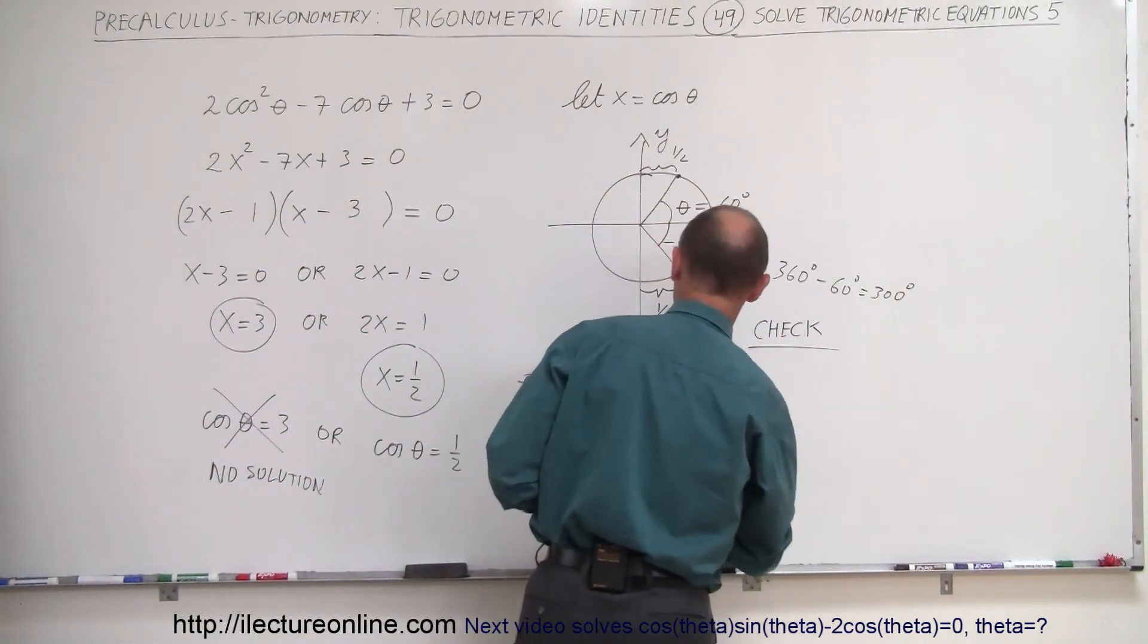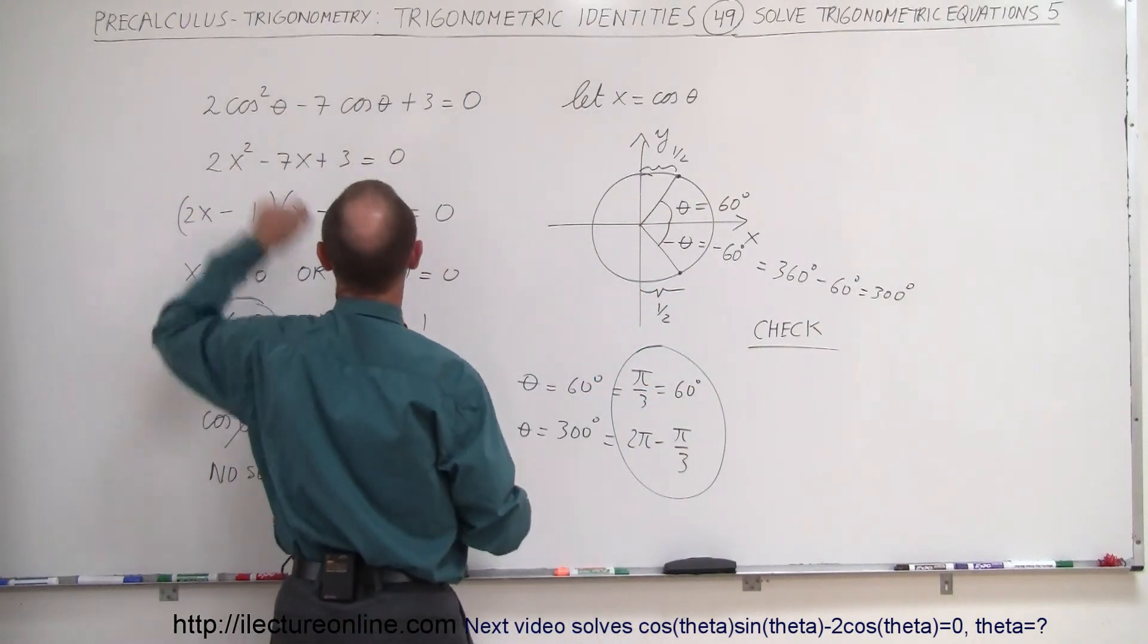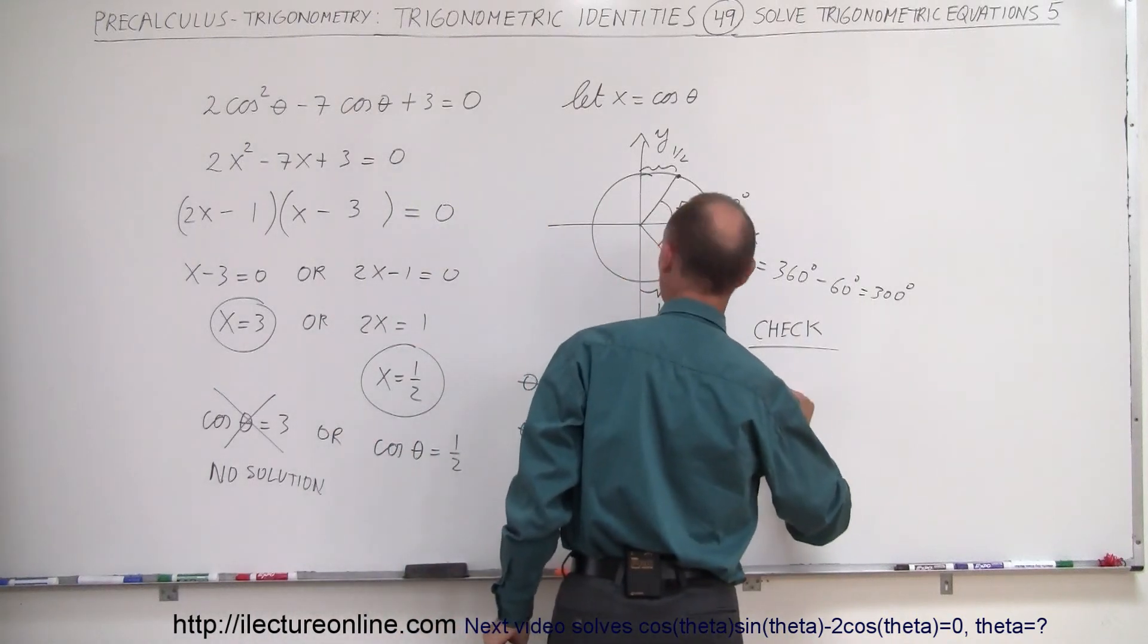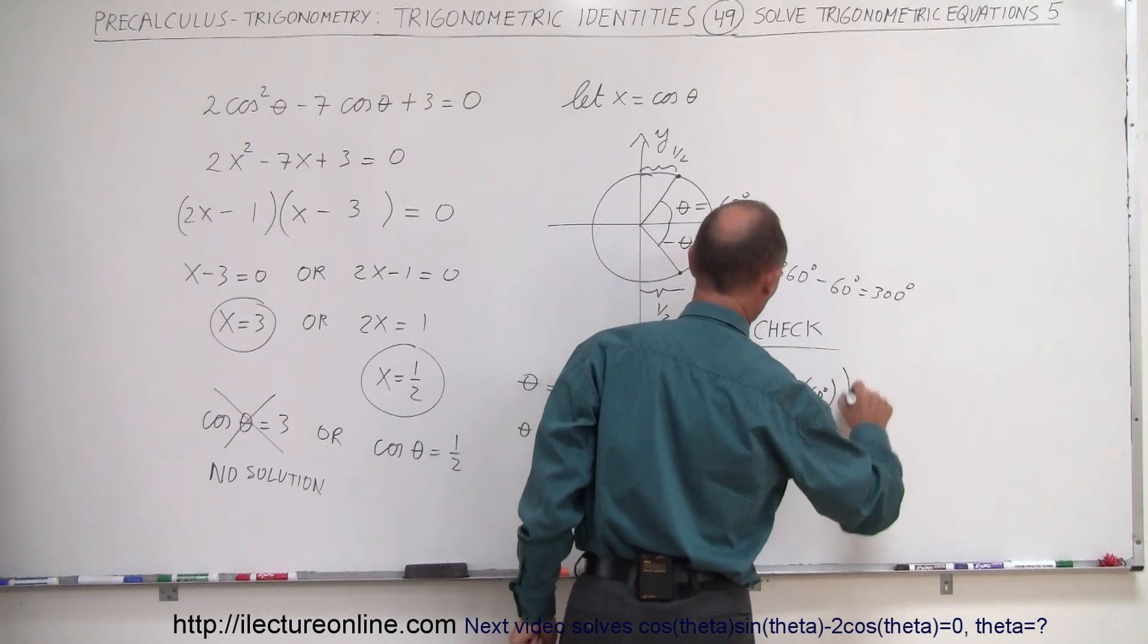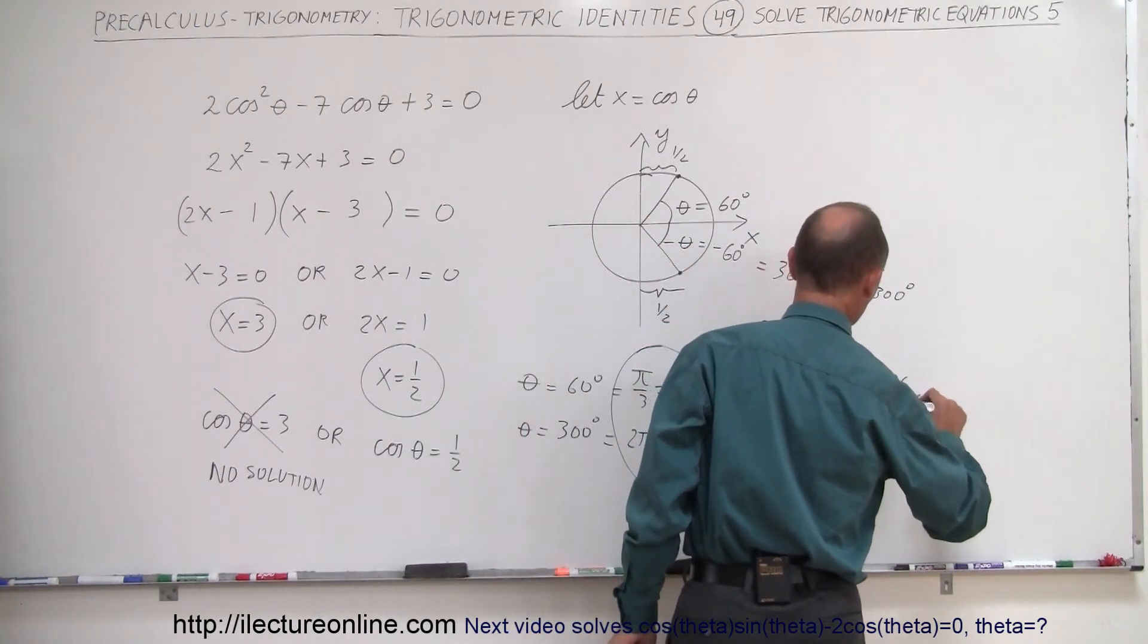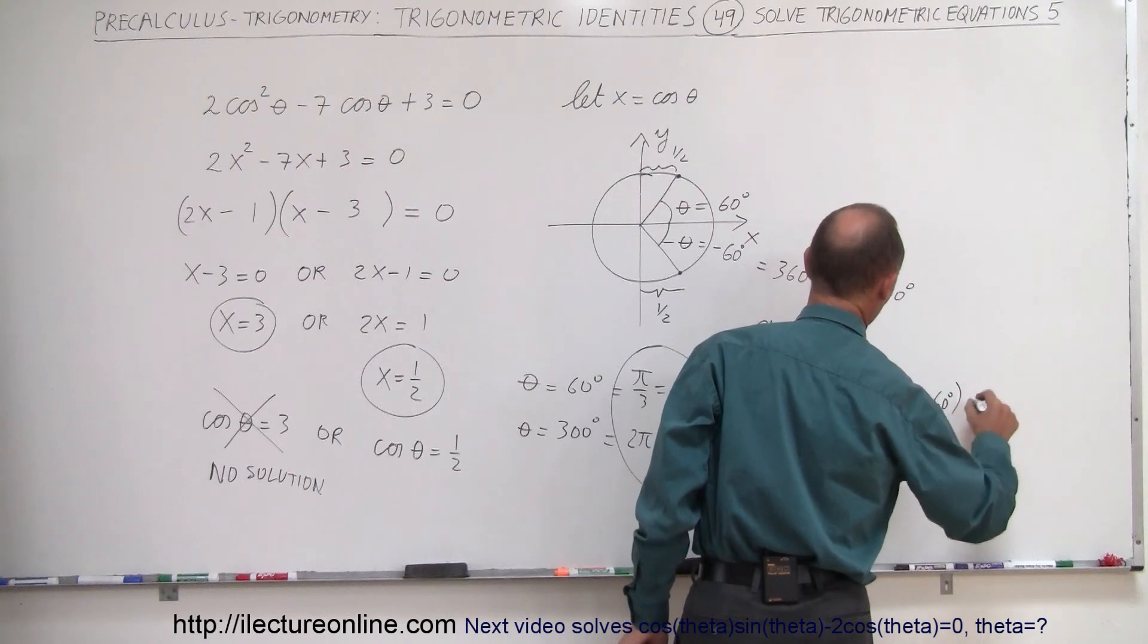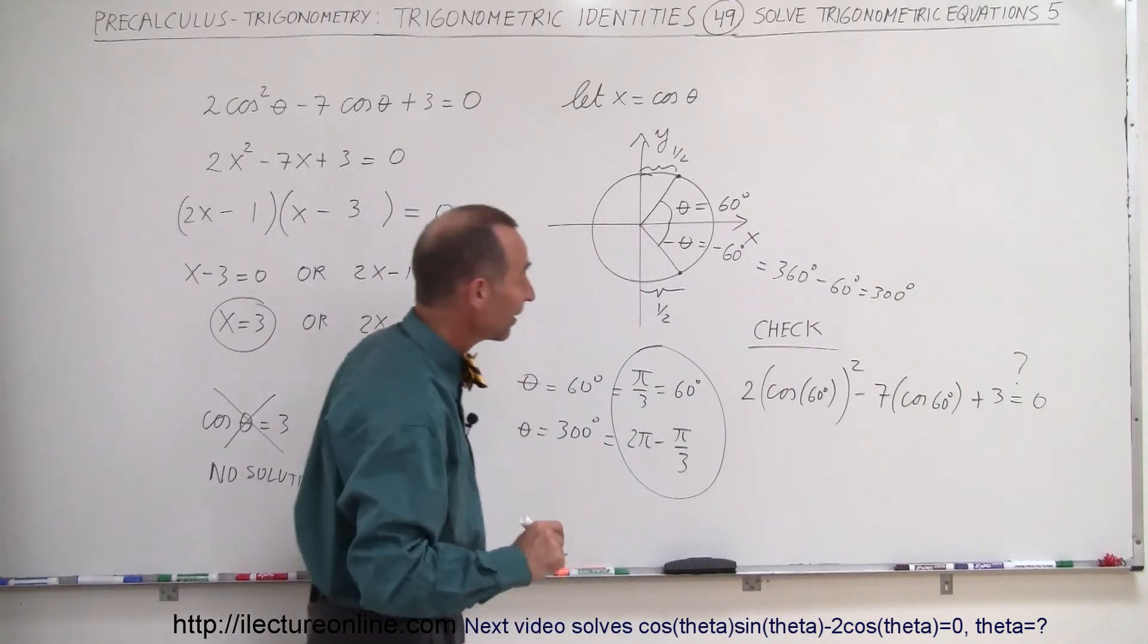All right, so if you plug in, let's say, pi over 3, which is equal to 60 degrees, into our equation right here, what do we get? So 2 times the cosine of 60 degrees, quantity squared, minus 7 times the cosine of 60 degrees, plus 3 equals 0. Well, question mark. Is that indeed correct? Let's find out.